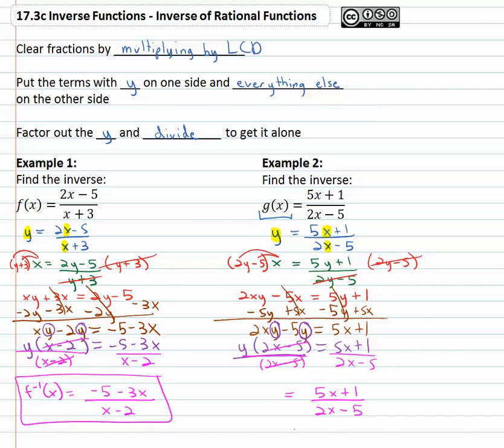But really, since that's the inverse, we should say g inverse of x equals (5x + 1)/(2x - 5).